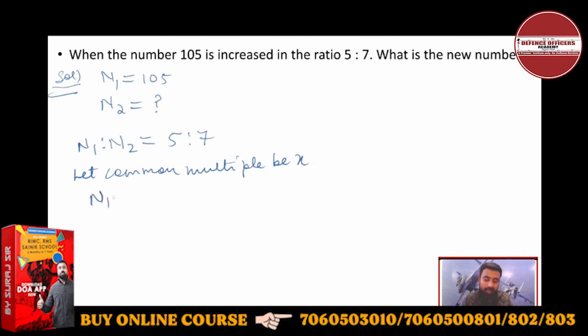Let common multiple be x. Then n1 will be how much? n1 will be 5x, and n2 will be 7x.